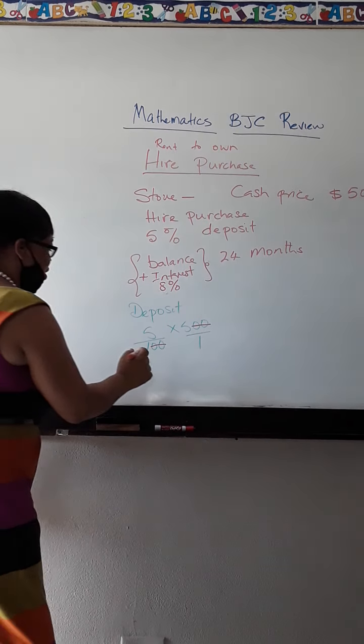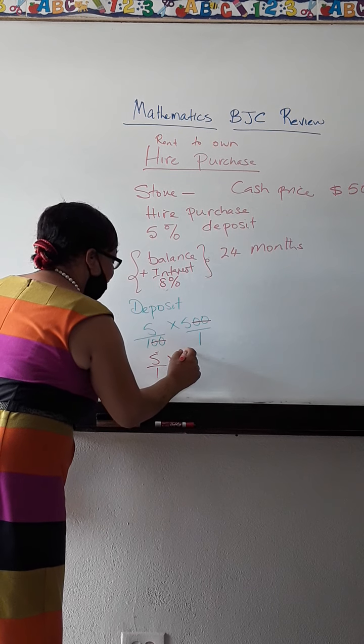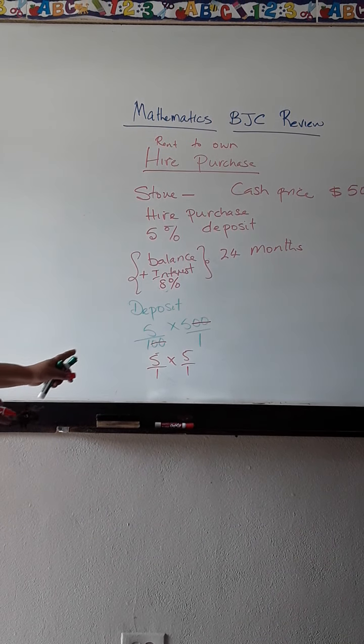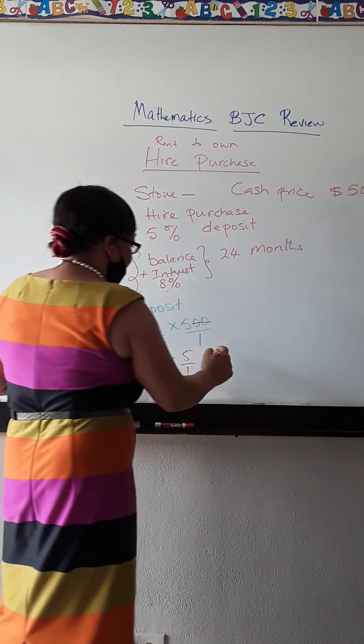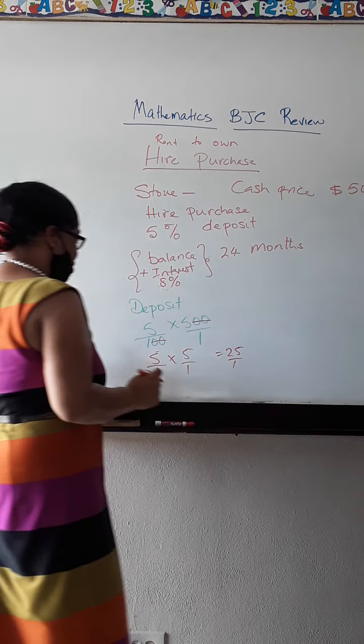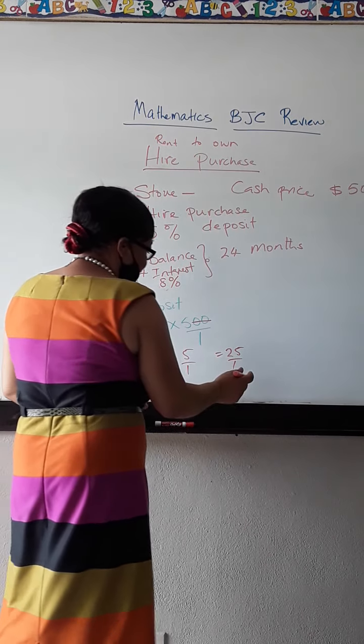These two zeros at the bottom here will eat up these two zeros at the top. And so I am now left with 5 over 1 times 5 over 1. Now I am going to multiply. 5 times 5 is going to give me 25 over 1. 25 over 1 is the same thing as 25.